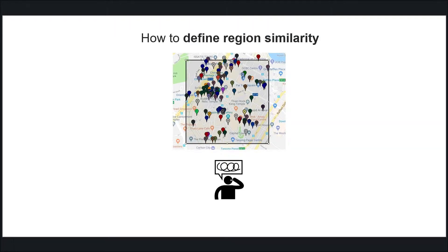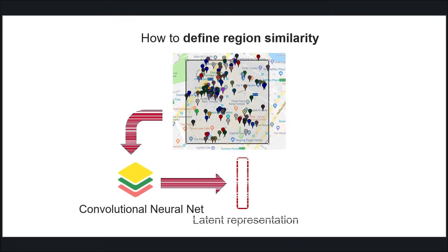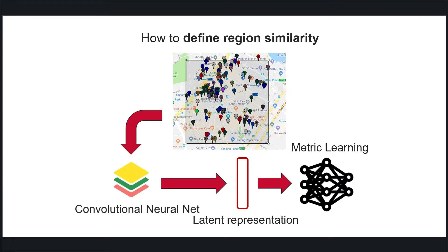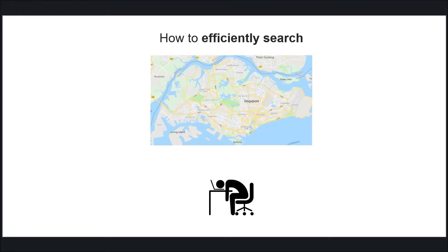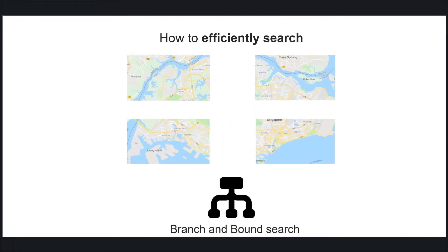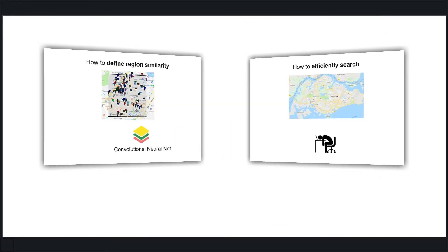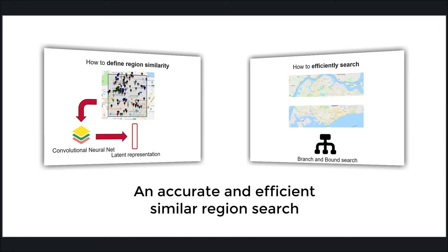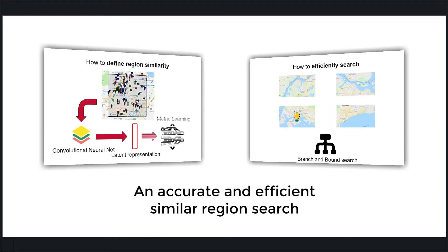To solve the first challenge, we use a convolutional neural network to learn the latent representation of a region, and propose a metric learning framework to learn the similarity. To solve the second challenge, we design a branch-and-bound search algorithm, which can effectively find the top-k similar regions to a given query. By doing these, we provide an accurate and efficient solution for similar region search, which would be practically useful in many real-world applications.